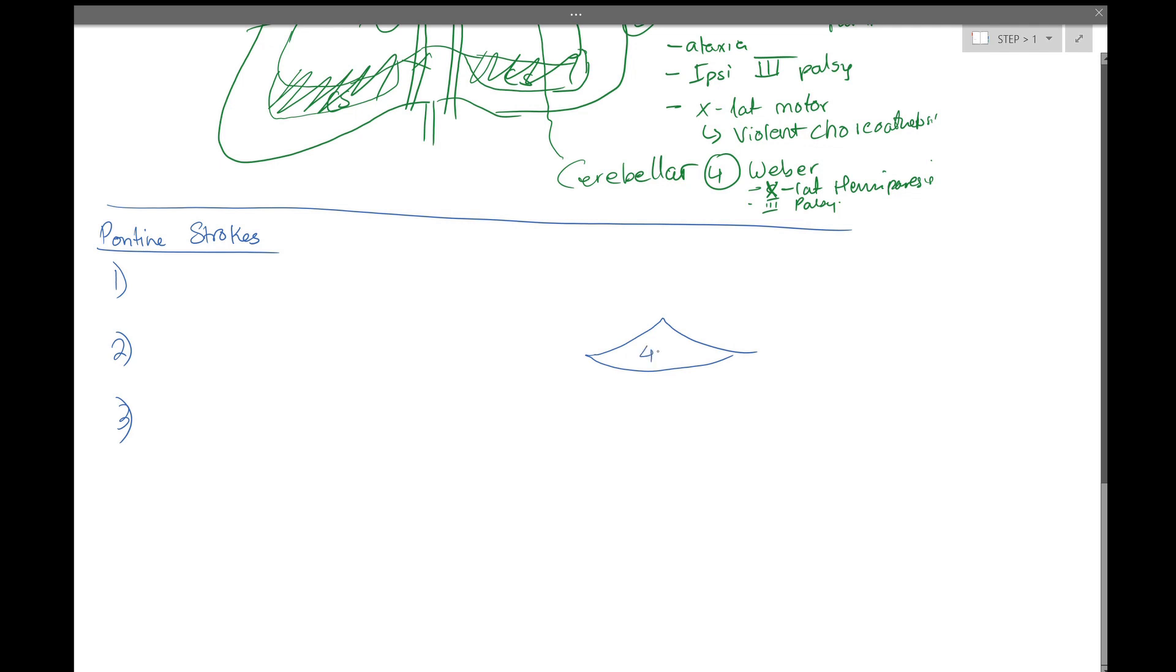So this weird shaped thing here is going to be the fourth ventricle. Behind this is the cerebellum, and then in front of it is going to be the pons.